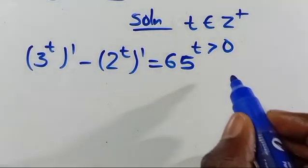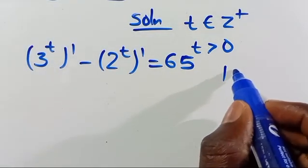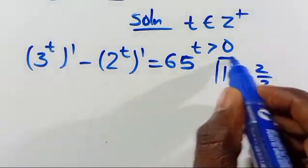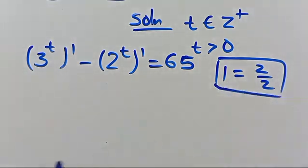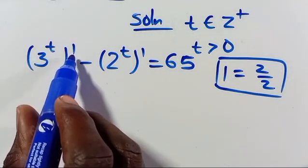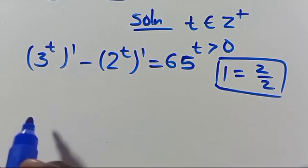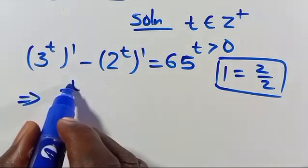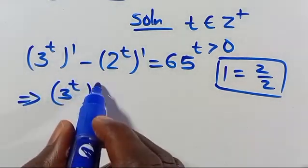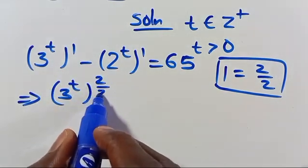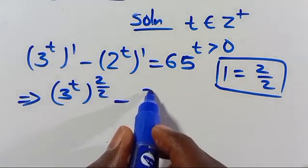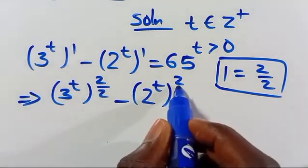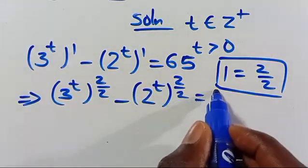From here let us recall that 1 equals 2 divided by 2. So let's substitute 1 to be equal to 2 divided by 2. This implies we have 3 to the power of t in parenthesis to the power of 2 over 2, minus 2 to the power of t in parenthesis to the power of 2 over 2, equals 65.